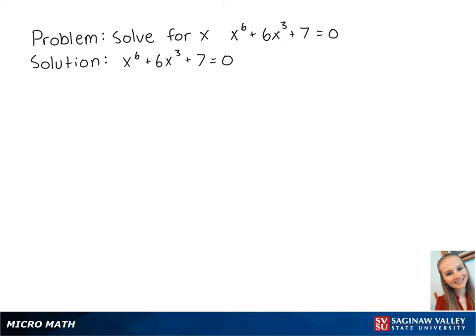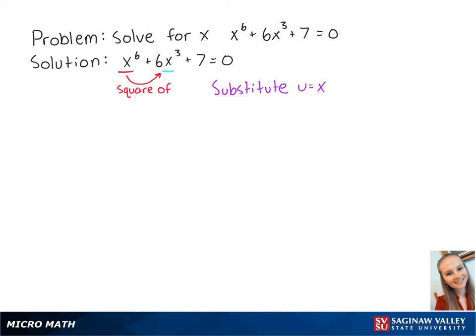For this problem, we want to solve for x in the equation x to the 6 plus 6x cubed plus 7 equals 0. First, we can see that x to the 6 is the square of x cubed. So we can make a substitution where u equals x cubed to make a quadratic equation.